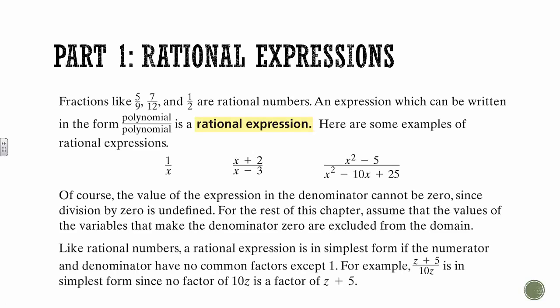Fractions like 5/9, 7/12, and 1½ are rational numbers. An expression that can be written in the form of a polynomial divided by another polynomial is a rational expression, and that's because you're going to have some variables in there. So it's not all just numbers. Here's some examples of rational expressions. So 1 is a polynomial, it's a monomial, and so is x. Something like (x+2)/(x-3), and then some scary stuff like this.